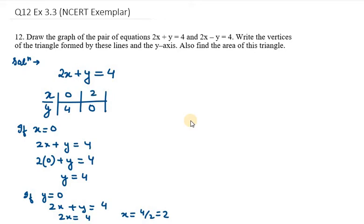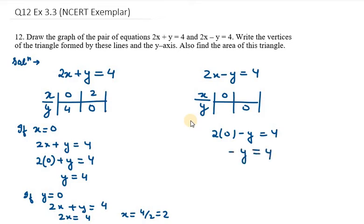Now we need to find the value for 2x minus y equals 4. Again, we need to draw a table. I'll be taking two different values, x equals 0 and y equals 0. When my x is 0, my y value will be minus 4 because the first term is 0. So minus y equals 4, so y will be minus 4.